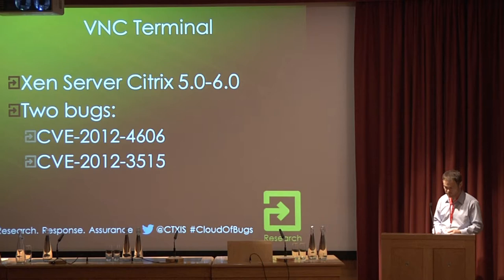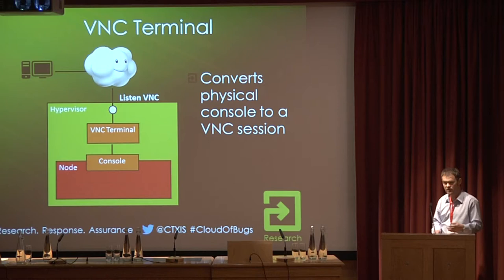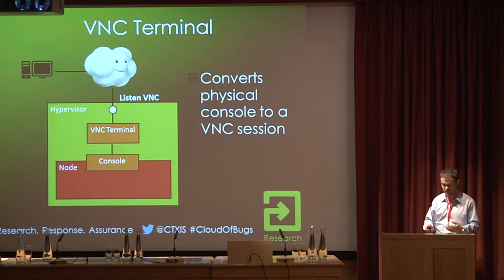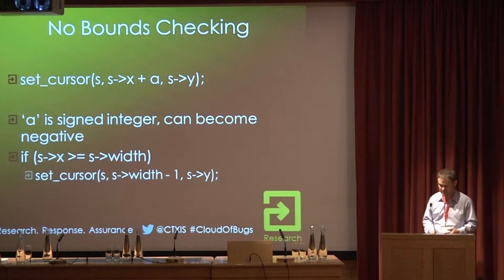The next and final bug I'm going to describe today was found in the VNC terminal — in fact, two bugs were found in the VNC terminal. This is a service that allows VNC access to the console of one of the nodes you may have hired from the cloud provider — a classic terminal emulator. The key issue is that it runs on the hypervisor. The process that provides this emulation service and listens is running on the hypervisor. Any bugs found within that process which can be exploited lead to owning the hypervisor.